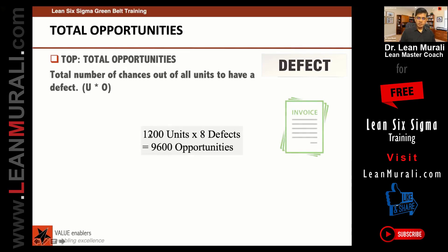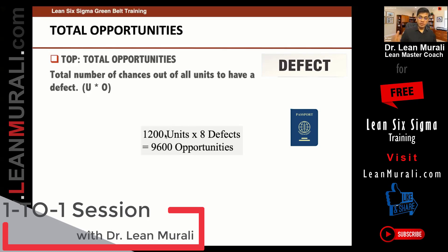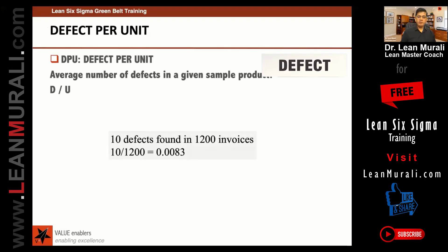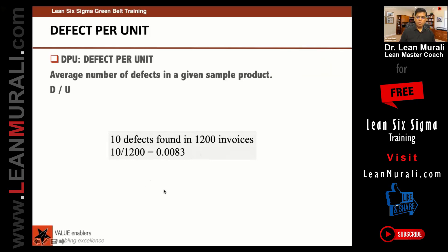We have 1200 invoices and we check eight things in each invoice, so there are 9600 opportunities. Defect per unit is the total number of defects found in a sample divided by the total sample size. For example, 26 defects found on 10 units gives a defect per unit of 26 divided by 10. If there are 10 defects in 1200 units, it is 10 divided by 1200.